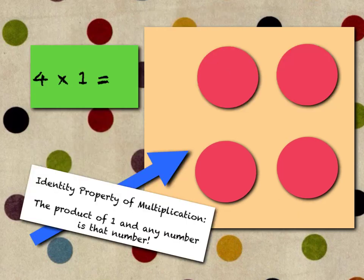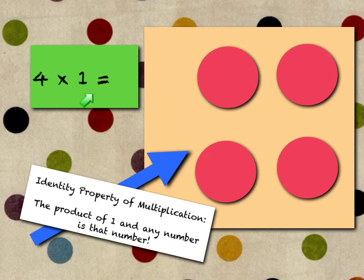Now let's take a look at the identity property of multiplication. The identity property of multiplication says that the product of one and any number is that number. Think of your identity — you are you. Your mom, dad, and I have driver's licenses, identification that says who we are. So the identity property says the product of one and any number equals that number.